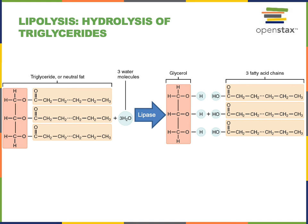Lipolysis is the hydrolysis of triglycerides, producing glycerol and fatty acids. Glycerol can be converted to glyceraldehyde phosphate and enter glycolysis or gluconeogenesis, whereas the fatty acids will enter beta-oxidation, a metabolic pathway in the mitochondrial matrix, where fatty acids are converted to acetyl coenzyme A. Acetyl coenzyme A can then enter the citric acid cycle.